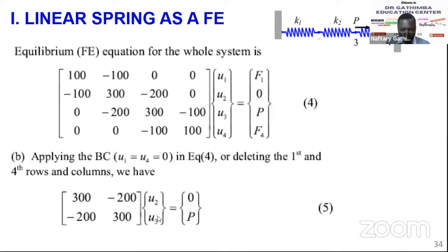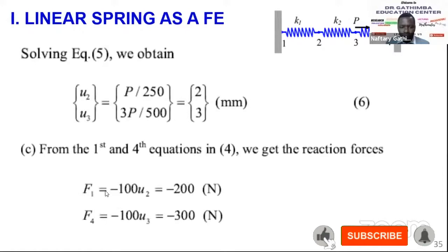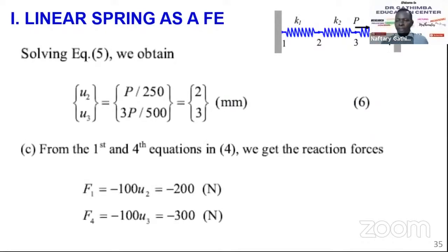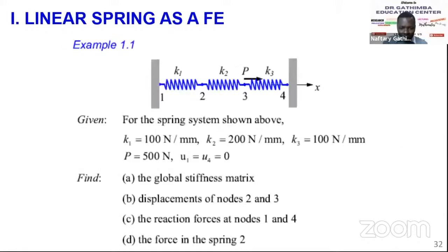To get the reaction forces F1 and F4, we go back and use the first and fourth rows of the original global equation. From the first row equation we get F1 = -100 × u2, which gives the reaction force at node 1. We can similarly get F4. We have now obtained the displacement at nodes 2 and 3 and the reaction forces at nodes 1 and 4.